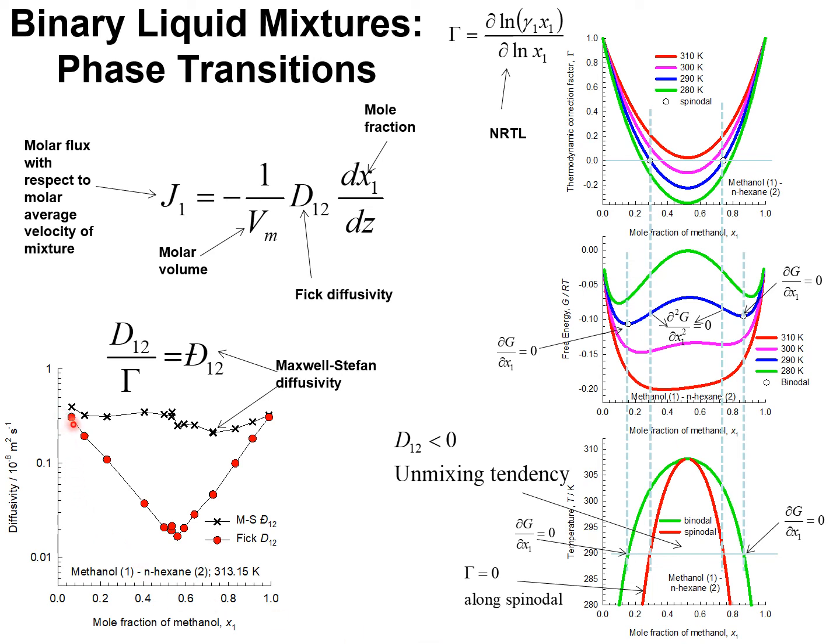The sharp decrease in the Fick diffusivity is due to the fact that at this temperature 313, we are very close to the two-phase region. The phase splitting in liquid mixtures occurs too quickly or too fast in order for us to follow the diffusion trajectories.